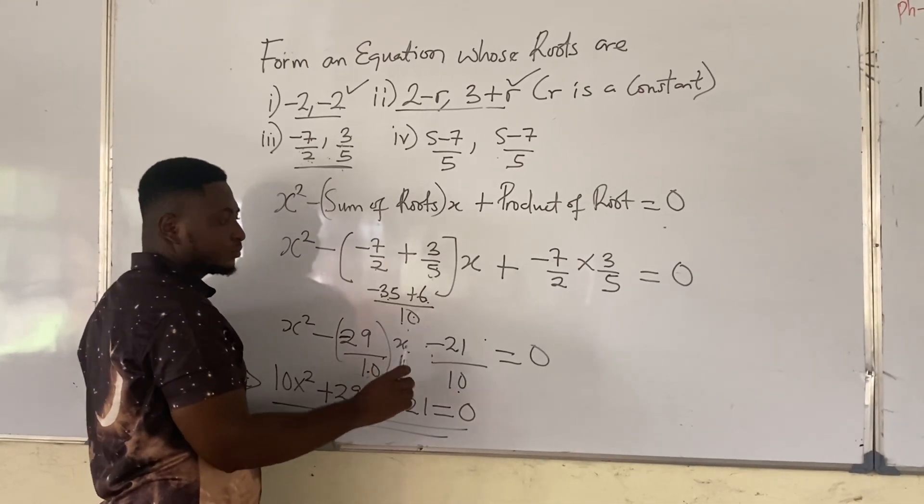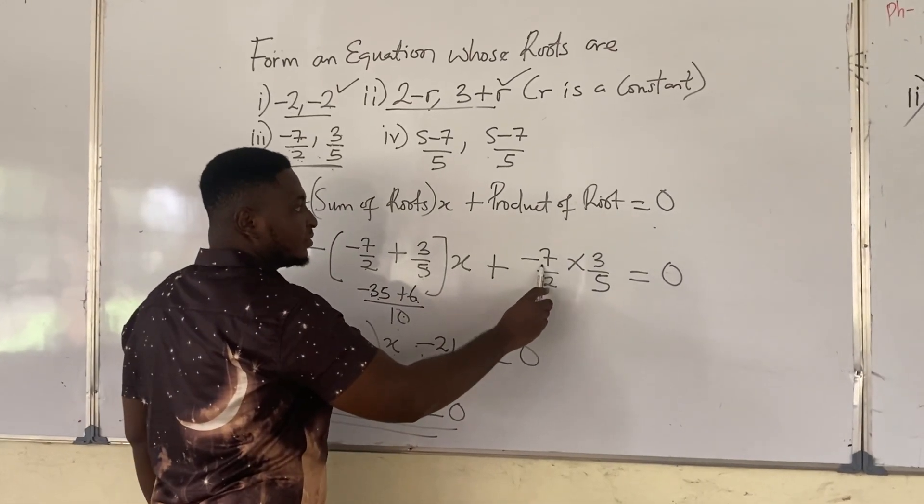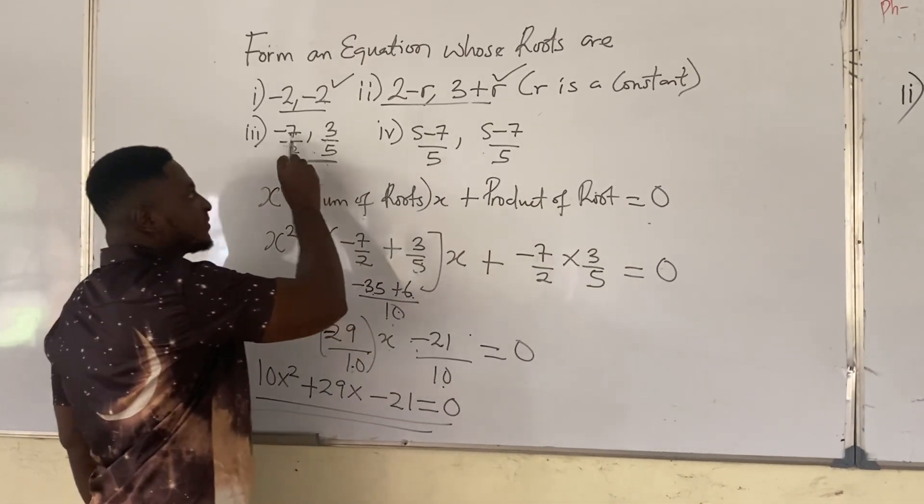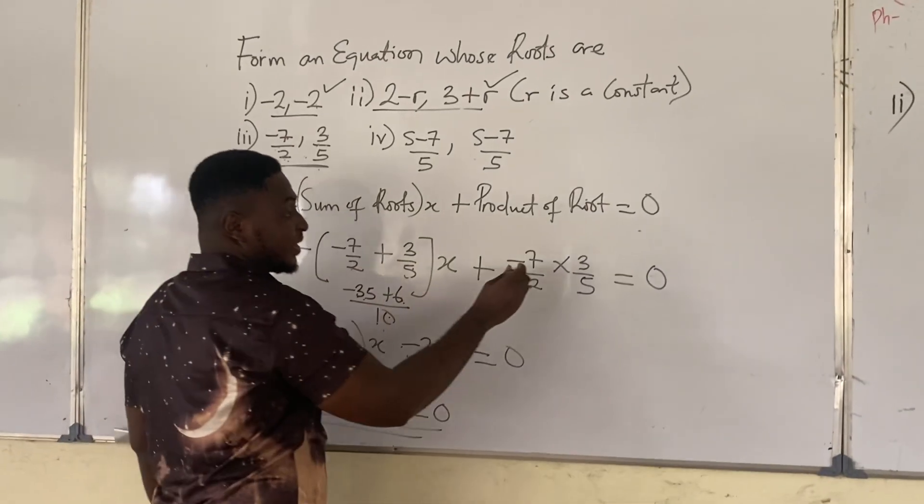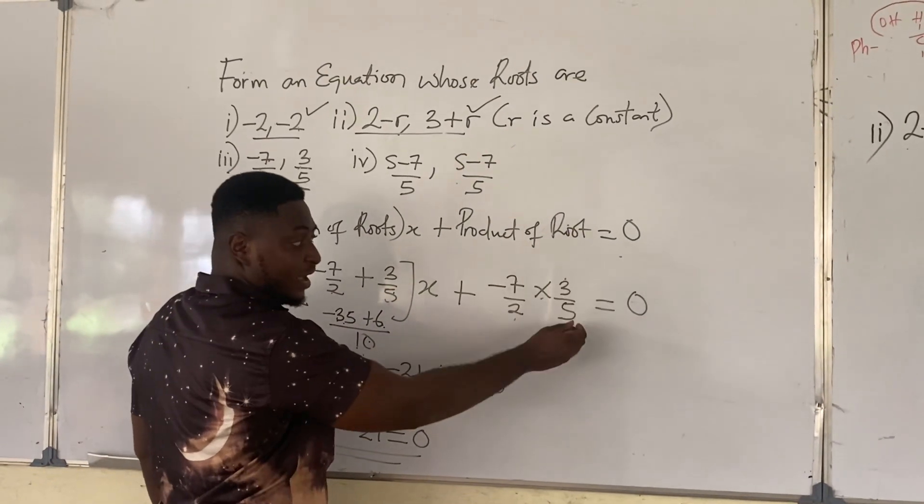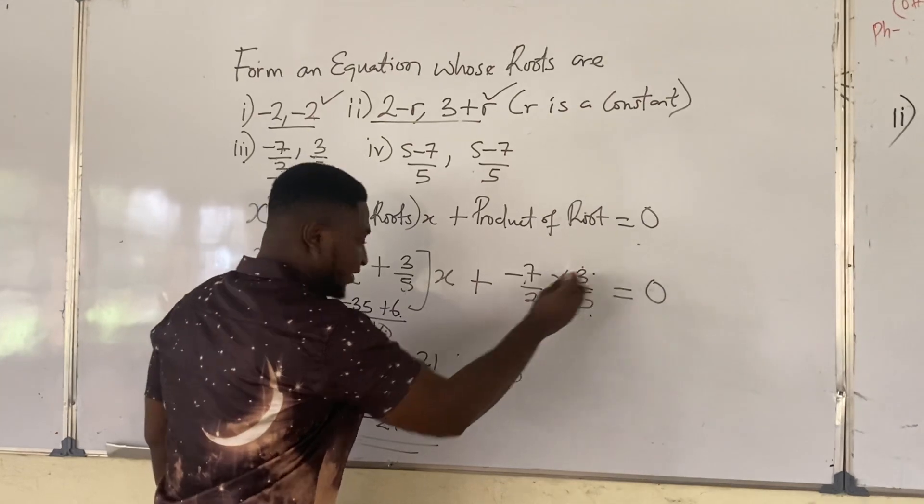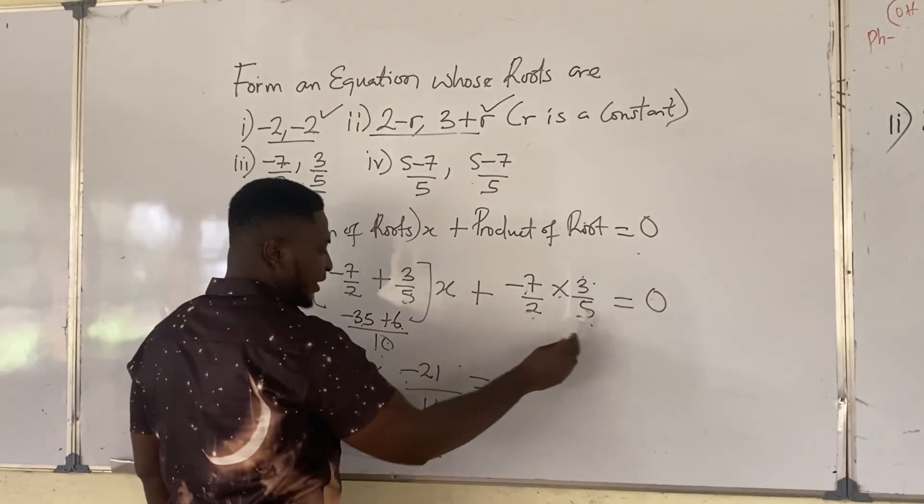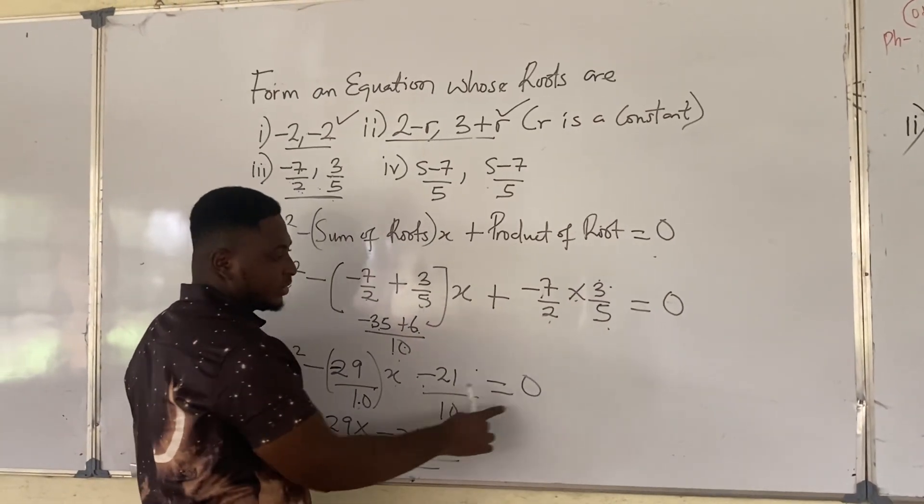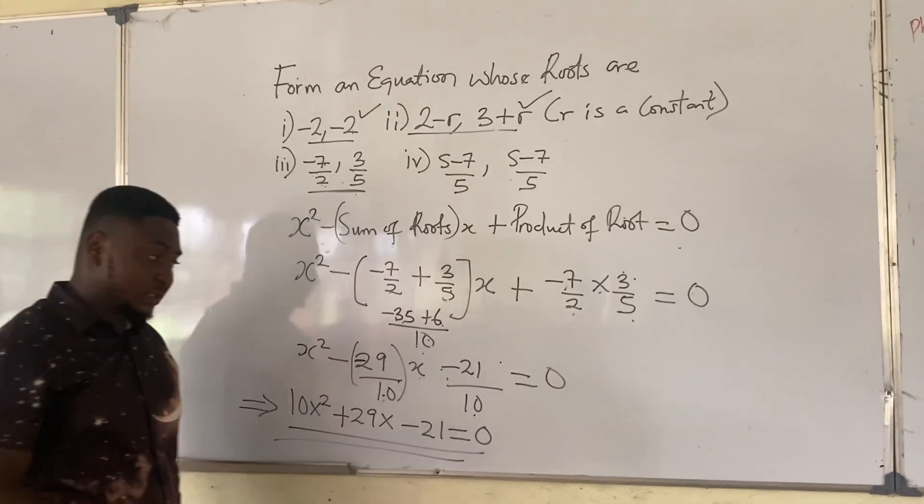X. Now product of roots means multiply the 2 roots, that's minus 7 over 2 and 3 over 5. So we're going to say minus 7 over 2 multiplied by 3 over 5, minus 7 times 3 is minus 21, 2 times 5 is 10. Then equate to 0.